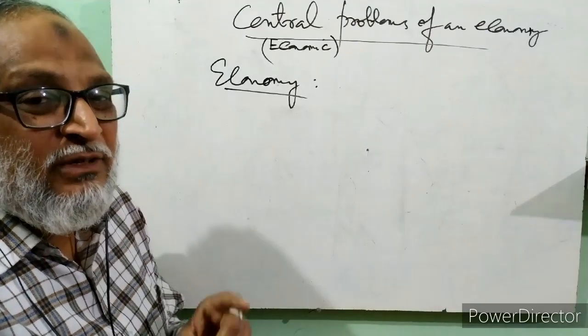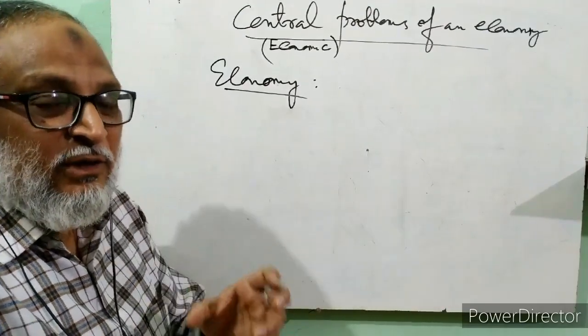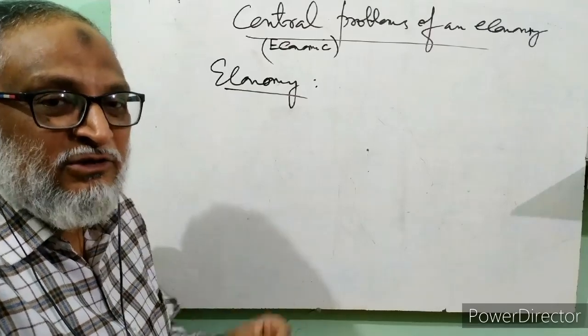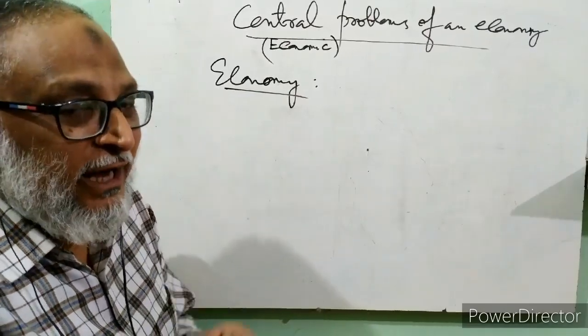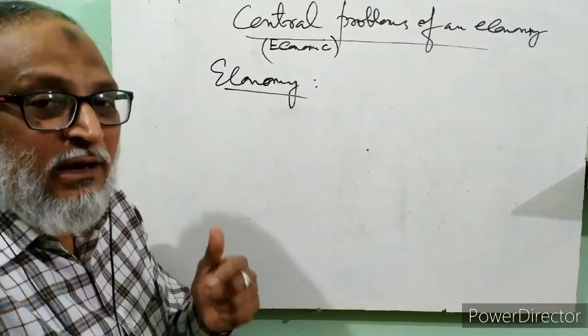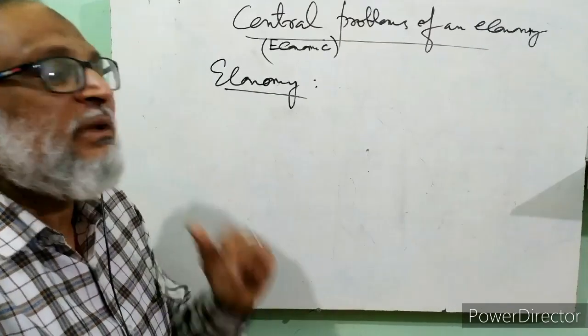Second is socialist economy, which is also called centrally planned economy, where all the factors of production and means of production are owned, managed and governed by government. In India, we follow the third type of system, called mixed economy.